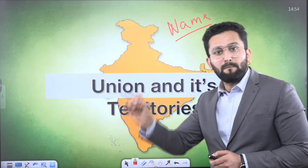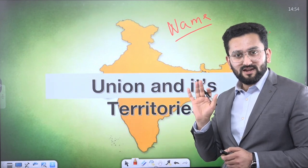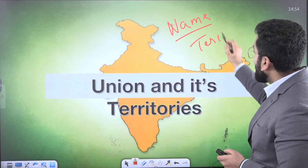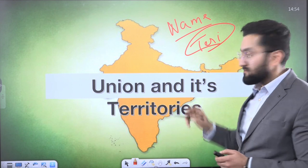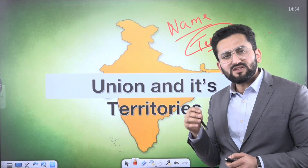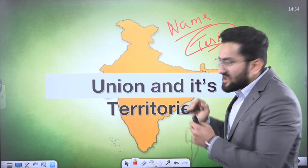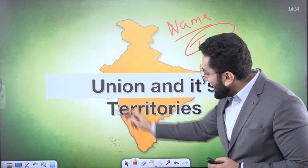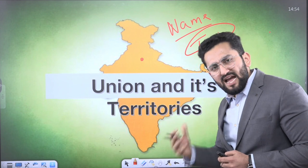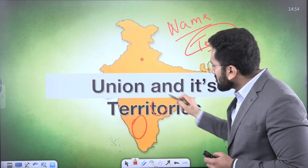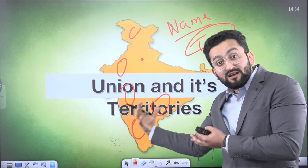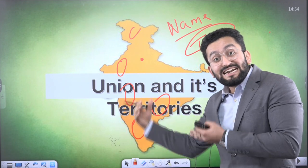India, that is Bharat. What is the second thing you expect? Along with name, you should expect the territory — what is the territorial expanse of that area? And not just territory, but how this territory is organized. Is it one administrative unit controlled from one central authority? Or do we have some other constituent units — states or UTs? The way this political entity is organized territorially.